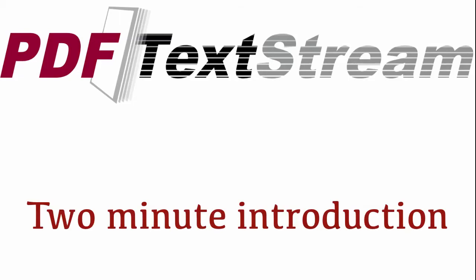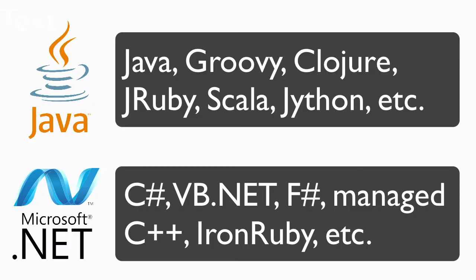PDF TextStream is a library for Java and .NET that can be used from any language on either the JVM or the .NET CLR or Mono.